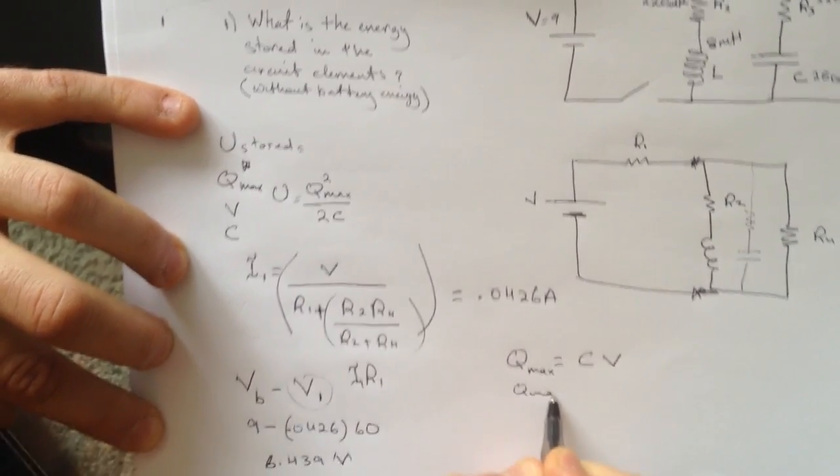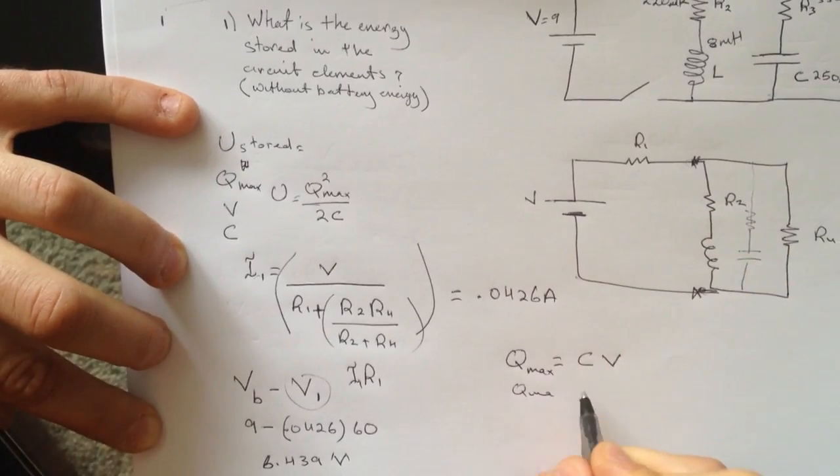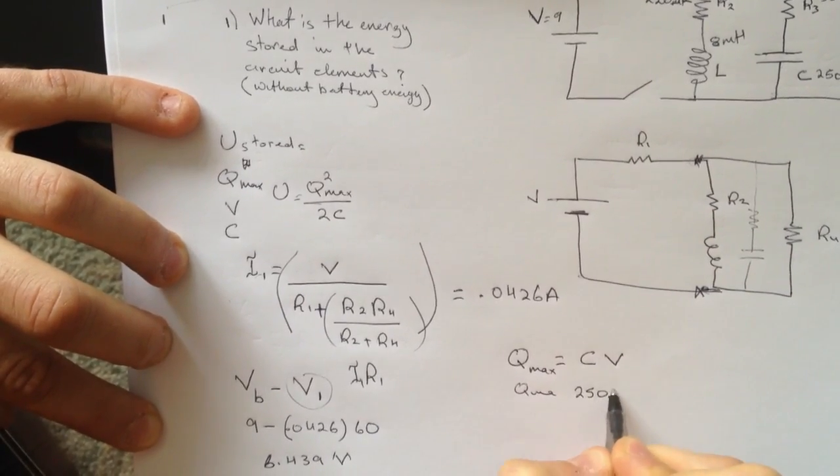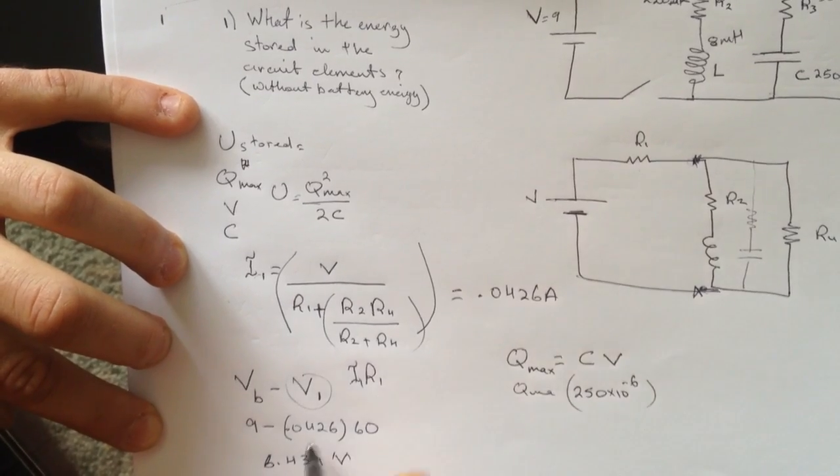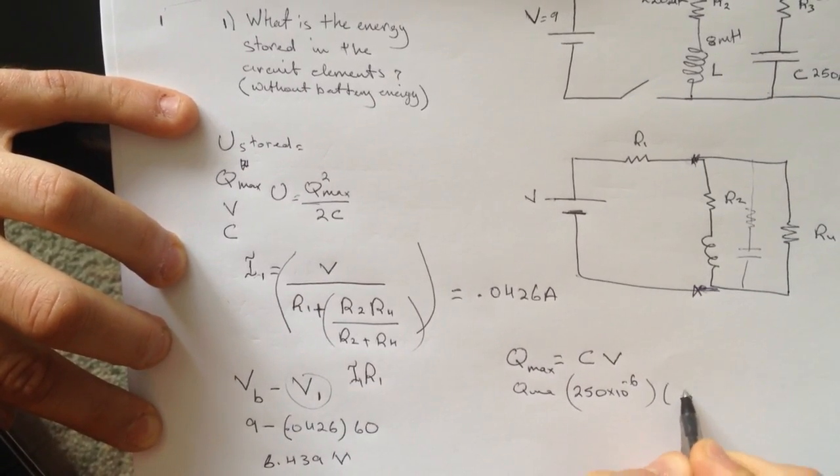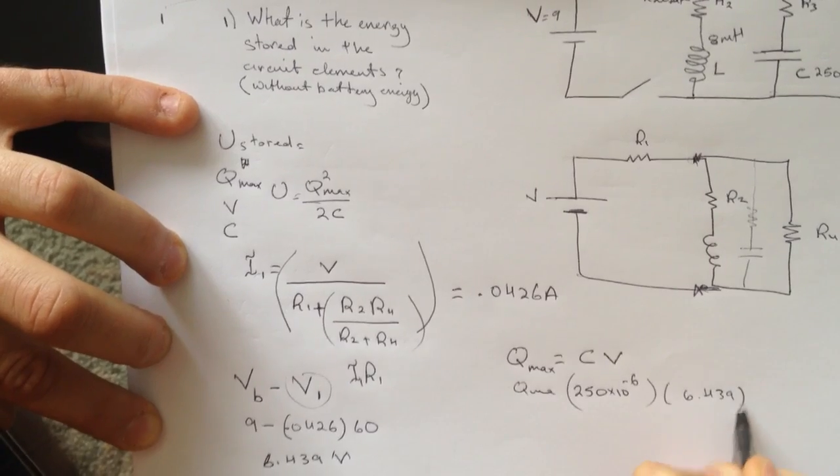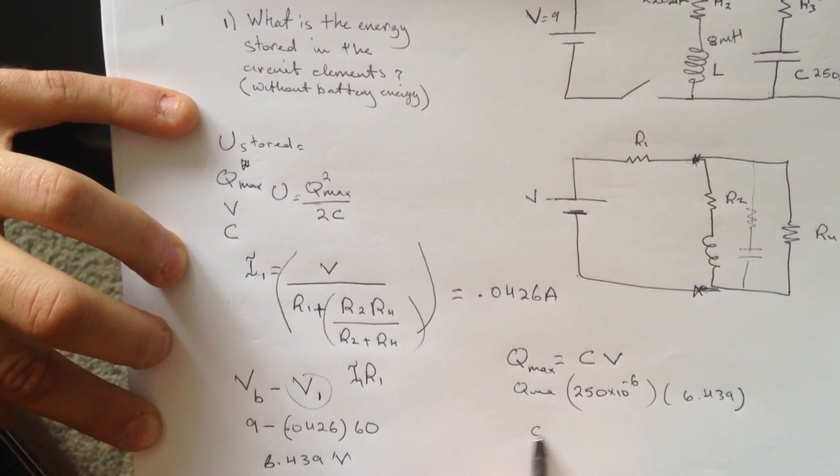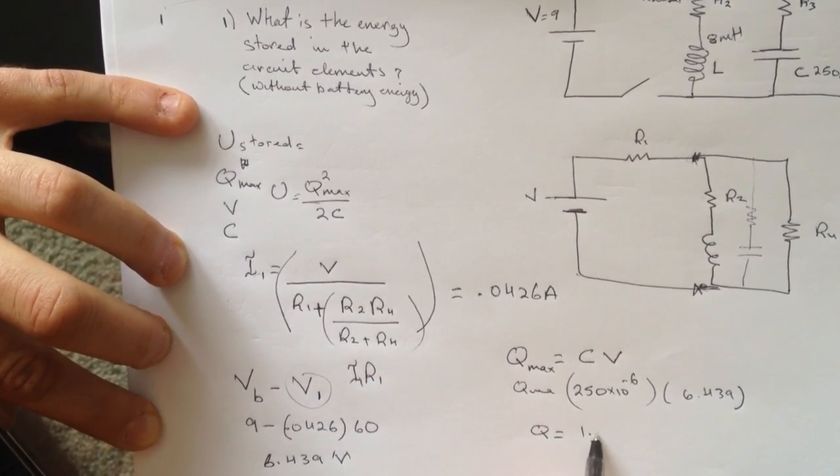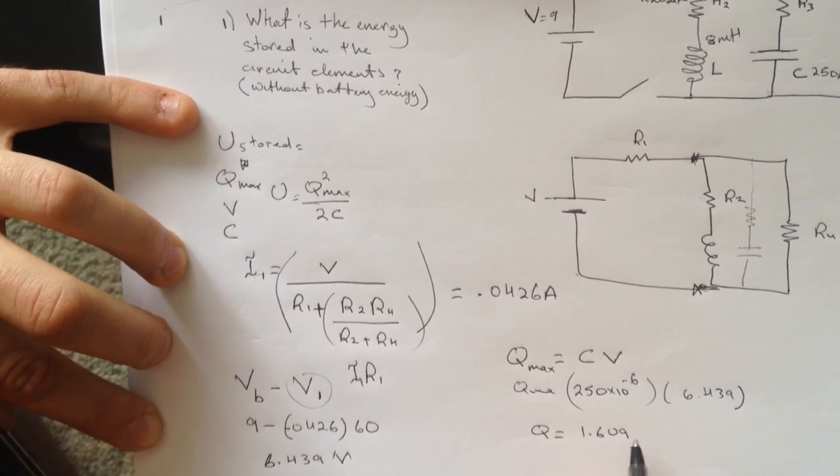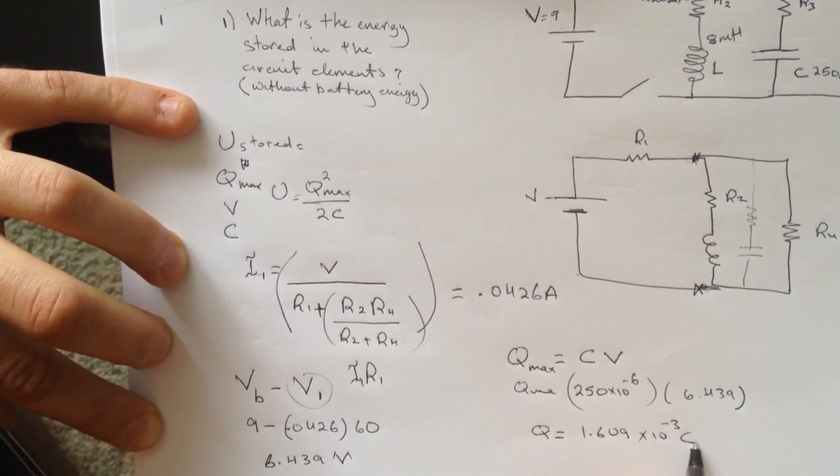And Q max will equal to, the capacitor is 250 times 10 to the negative 6 times the voltage we got here, 6.439. I got for Q is 1.609 times 10 to the negative 3 Coulomb.